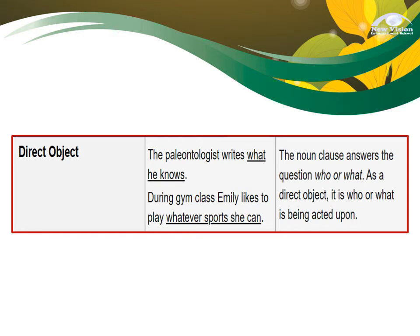The second use of your Noun Clause is as a direct object. Example: 'The paleontologist writes what he knows.' Here the Noun Clause answers the question who or what, which is the basis for a direct object. What does the paleontologist write? — 'What he knows.' Another example: 'During gym class, Emily likes to play whatever sports she can.' What does Emily like to play? — 'Whatever sports she can.' So it answers the question what, making it a direct object.